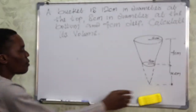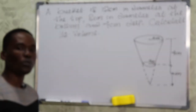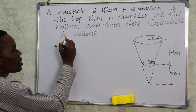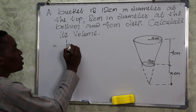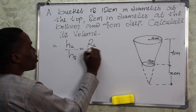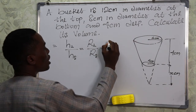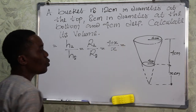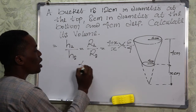We have a bigger cone and a smaller cone. To solve this, we use the principle of similar shapes — the ratios of similar shapes. The ratio is: height of larger cone over height of smaller cone equals radius of larger cone over radius of smaller cone. The height of the larger cone is (4 + x), the height of the smaller cone is x, the radius of the larger cone is 6, and the radius of the smaller cone is 4.